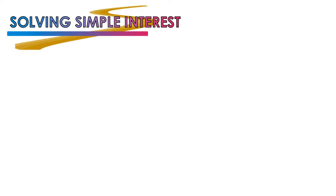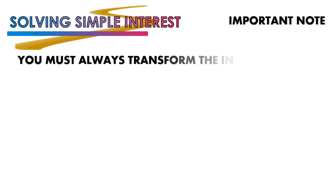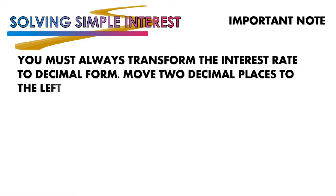There are important notes before solving simple interest. First, you must always transform the interest rate to decimal form by moving the decimal point 2 places to the left. For example, if the interest rate is 2%, move the decimal twice to the left to get 0.02.